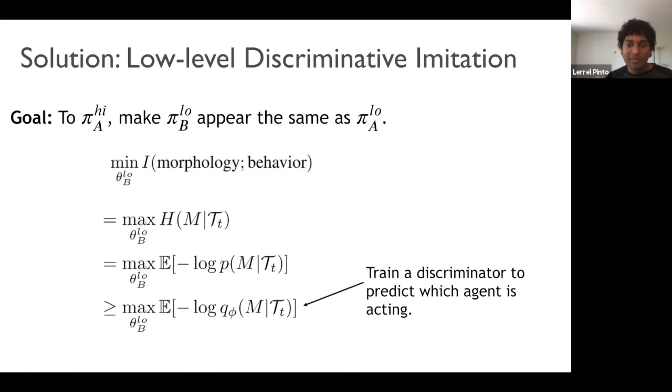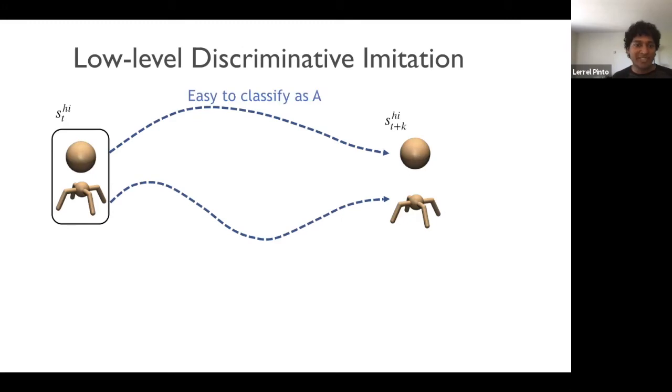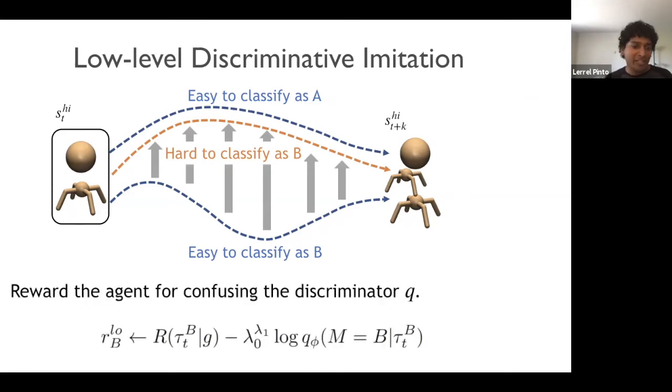Now, after a bunch of math, it ends up becoming training a discriminator which can predict which agent is acting. So now when you start learning a discriminator, initially, it will very easily be able to say if a trajectory is from agent A or if a trajectory is generated through agent B. Now, the goal of agent B is to create a trajectory which looks similar to agent A. So to do this, we effectively need to make it hard for the discriminator to classify if agent B's trajectory is coming from agent B or from agent A. So if it's able to confuse the discriminator, it means that it can actually create a low-level which appears similar to agent A.